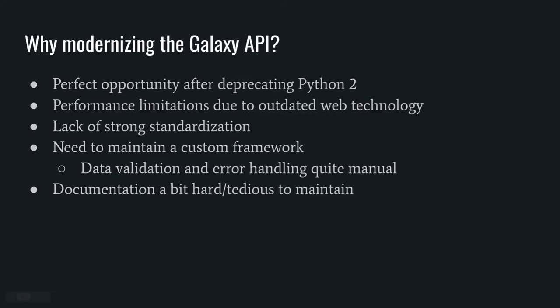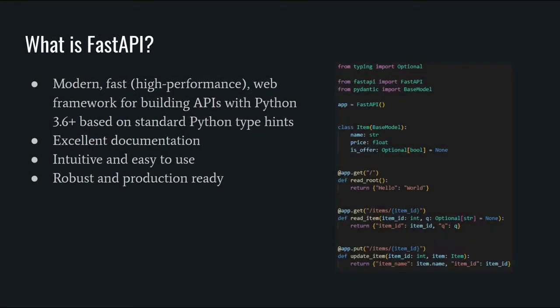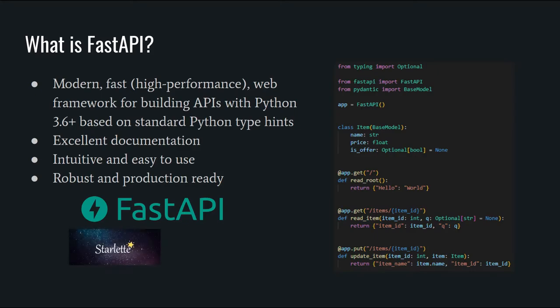Since the support of Python 2 was recently dropped in Galaxy, we can now look into more modern frameworks and technologies around REST APIs in the Python ecosystem. One of those frameworks that really stands out is FastAPI. It is basically a high-performance web framework for building APIs with Python 3, based on standard Python type hints. It is built on top of other great Python libraries like Starlette and Pydantic, with a focus on simplifying the development of REST APIs.